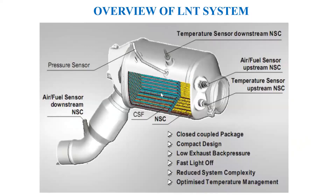This is how the LNT looks — you have the catalyst inside the substrate with platinum, rhodium, and barium carbonate coating. This system is very compact and good for design, with low exhaust back pressure, and is less complex than SCR. Sensors are used — including an air-fuel sensor measuring temperature, and upstream and downstream NOx storage catalyst sensors to measure the NOx output.